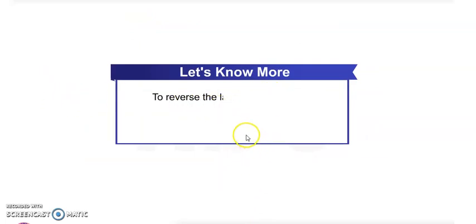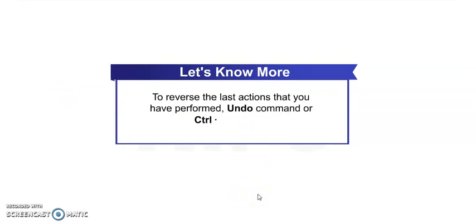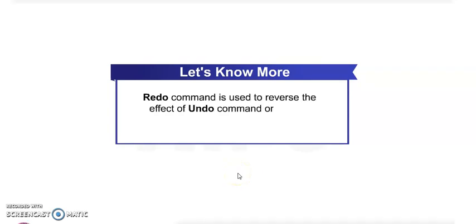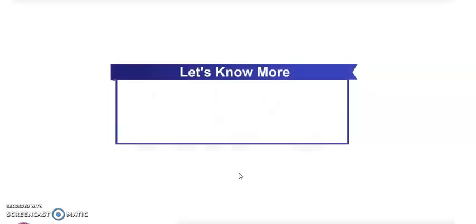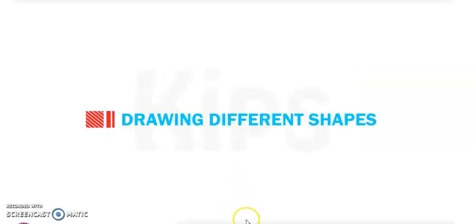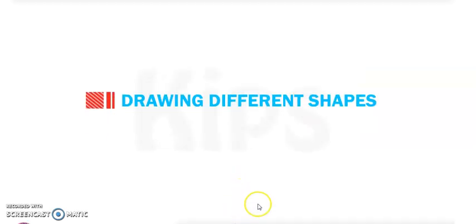To reverse the last action you have performed, use the Undo command or press Control+Z. For the Redo command, it reverses the effect of the Undo command — use Control+Y. To clear all objects from the drawing area, click Select All and then the Delete option. This will remove all selected drawings.